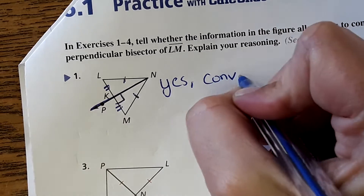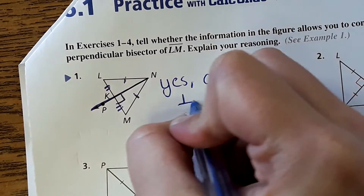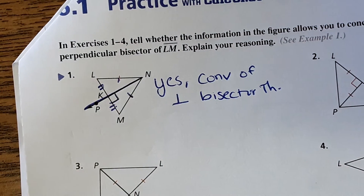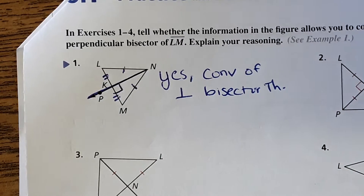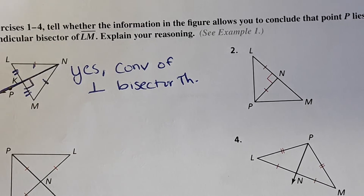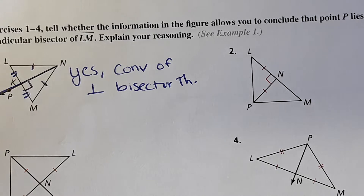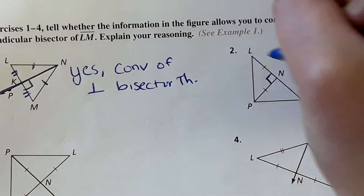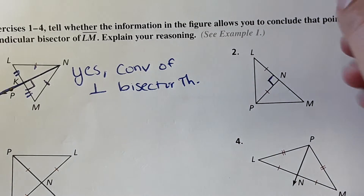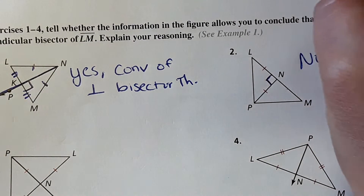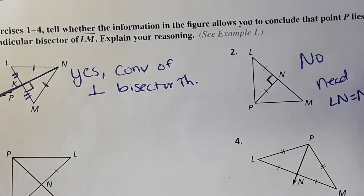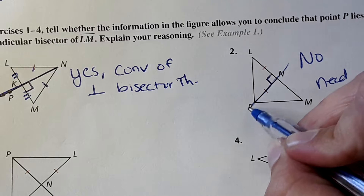Converse of perpendicular bisector theorem. Number two — can we use this to prove? Well, we'd have to have this perpendicular and we'd also have to know that this is the same length as this, and it doesn't tell us that. So no.